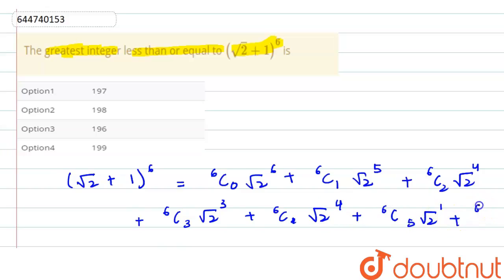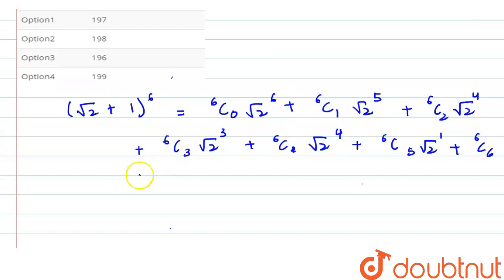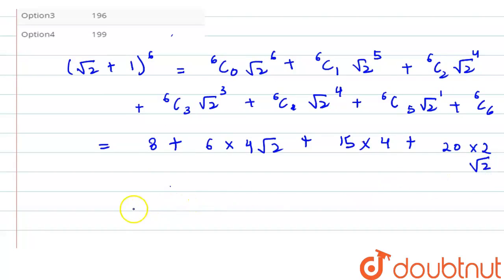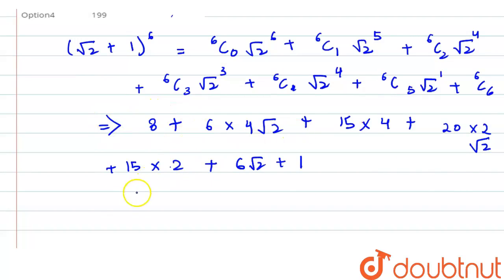And on solving this we get 8 plus terms involving √2, which simplifies to 99 + 70√2.